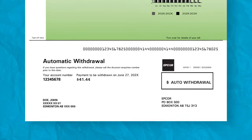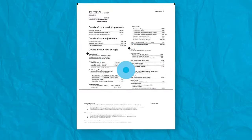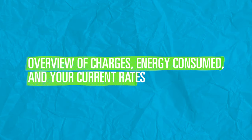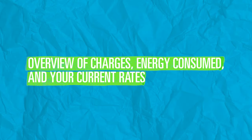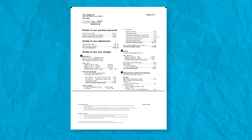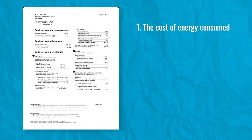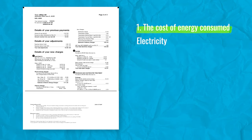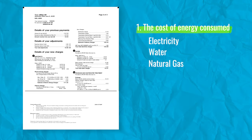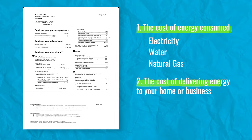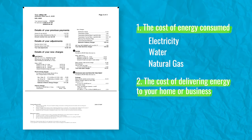On the subsequent pages of your bill, you'll see the charges for energy you consumed, current rates, and any other fees used to calculate your bill. The two main charges on your bill are: 1. The cost of energy consumed — electricity, water, and natural gas. 2. The cost to deliver the energy to your home or business.